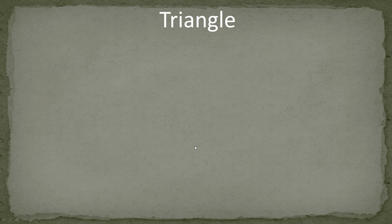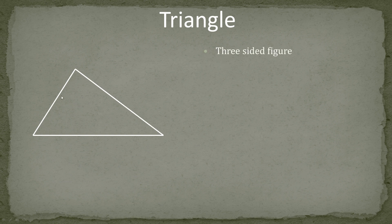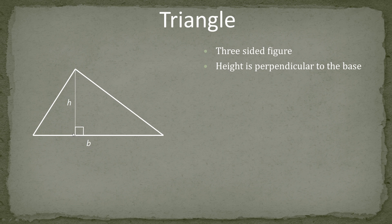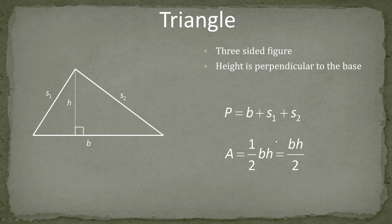The next figure is the triangle — a three-sided figure. The height of the triangle is perpendicular to the base, and any of the three sides can be rotated to be the base. If this is the base, this is the height that corresponds to it, and they intersect at right angles. For the perimeter, we just add up the three sides — base plus side one plus side two; there's no way to simplify this formula. The area can be expressed in two ways that mean the same thing: base times height times one-half, or base times height divided by two. Use whichever form you prefer.